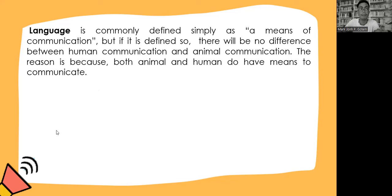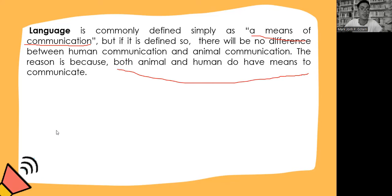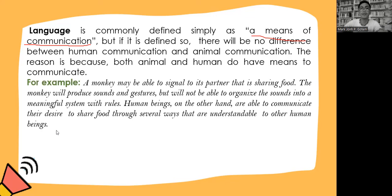Language is commonly defined as a means of communication. But if it is defined as such, then there will be no difference between human communication and animal communication, because both animals and humans have means to communicate. For example, a monkey may be able to signal to its partner that it is sharing food. The monkey will produce sounds and gestures but will not be able to organize that sound into a meaningful system with rules.